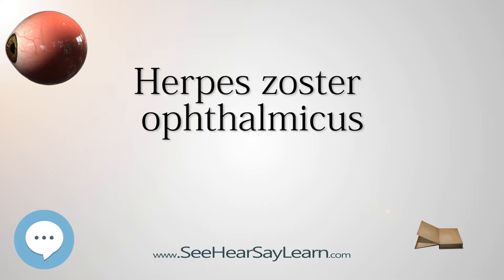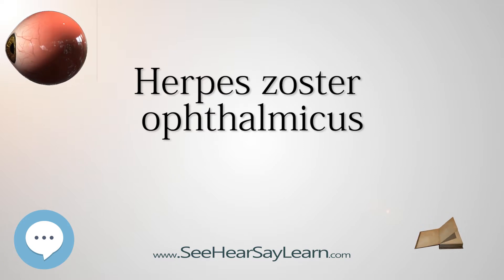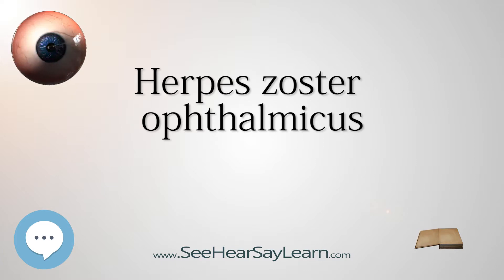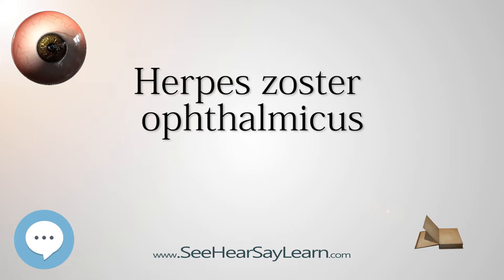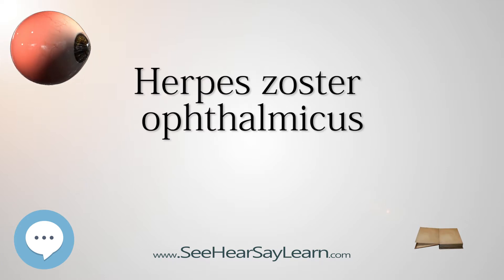Disciform keratitis, also called disciform endotheliitis, presents with a disc of corneal edema, folds in Descemet's membrane, mild inflammation within the anterior chamber, and fine keratic precipitates. It is a chronic condition occurring between 3 months and several years after the onset of the rash, and is uncommon.